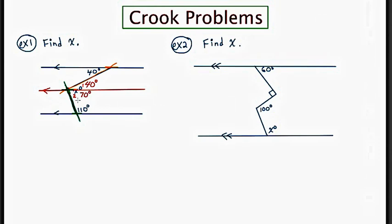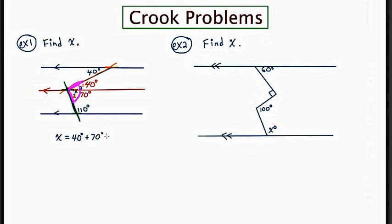Remember that the original angle x was marked by angle 1 and angle 2. Angle x went all the way from here to here — a portion of it was 40 and a portion was 70. That means x is the combination of both: x equals 40 plus 70, or 110.